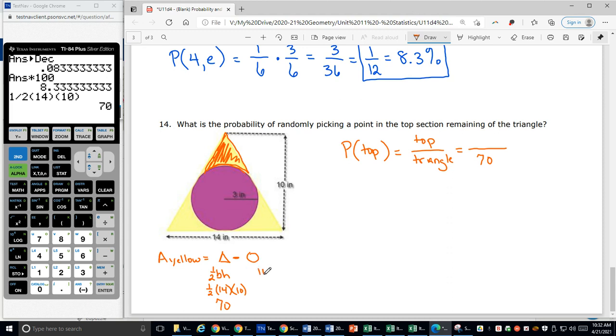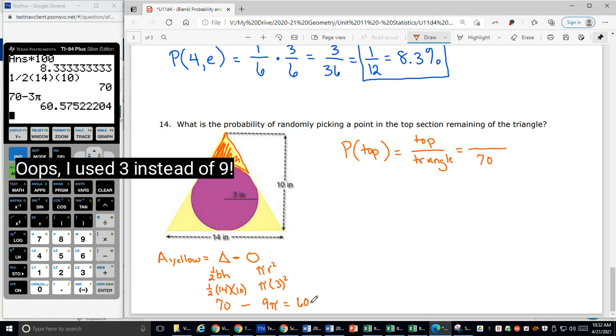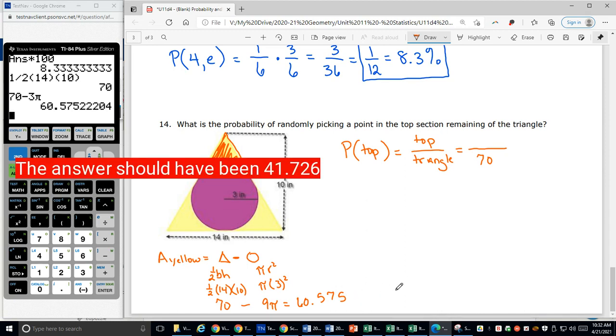And then I'm going to take away the circle. So pi r squared. That's going to be pi times my radius is three squared, so that's going to be nine pi. So I need to take those away and that'll give me all three yellow sections together. So 70 minus nine pi. I'll get a decimal, that's okay. It's going to be 60.57522204. I'm just going to write down that much. Now that's all three yellow pieces together.